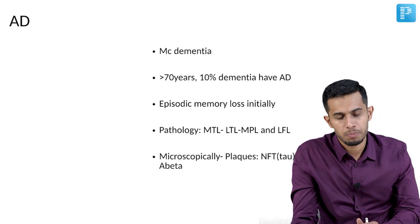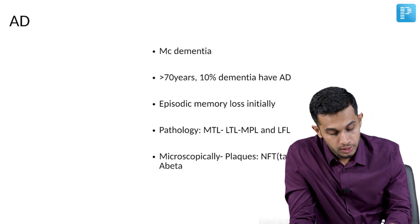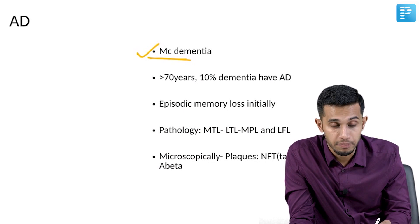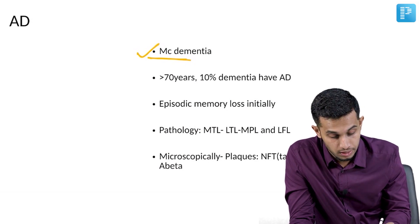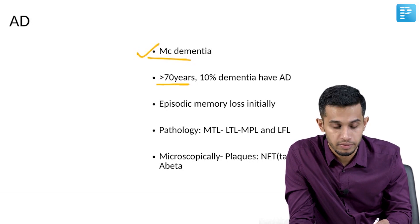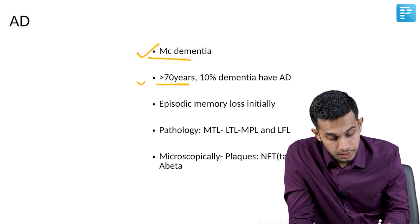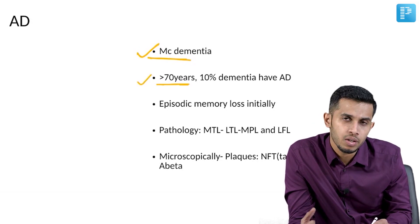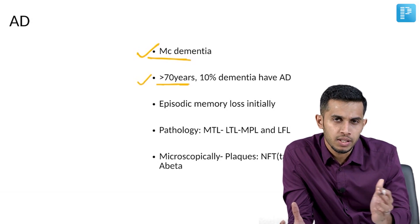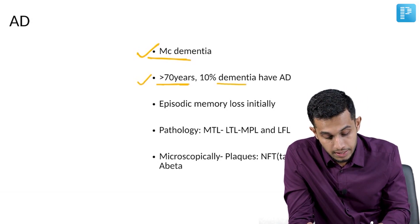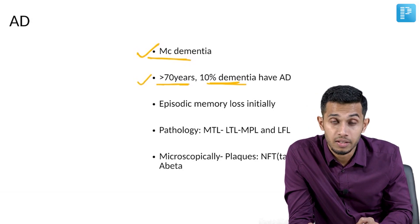Now coming to Alzheimer's disease proper. It is the most common type of dementia and the most common type of major neurocognitive disorder. It is usually seen in people more than 70 years of age, and whenever we assess people in this age group, 10% of them will have Alzheimer's dementia.